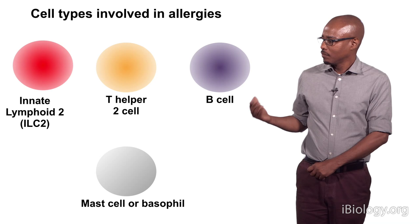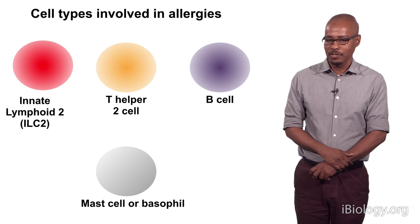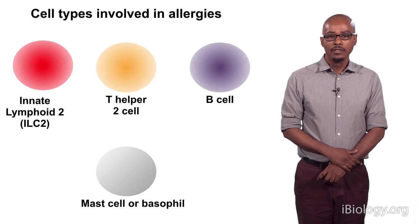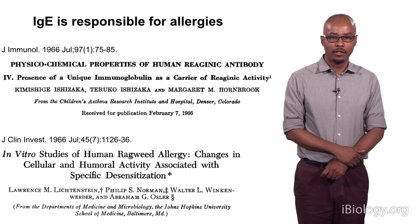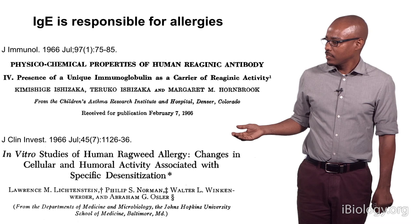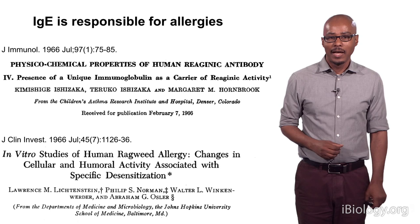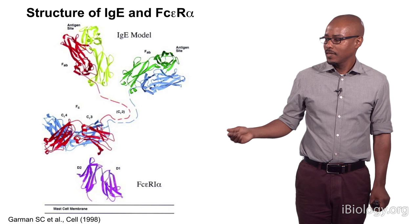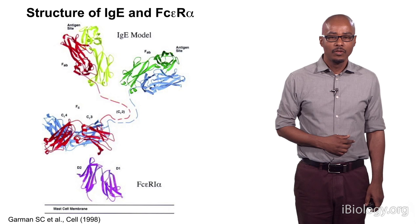The allergic response is actually a combination of the response of a number of different cells, shown over here: an innate lymphoid cell, a T helper II cell, a B cell, and a mast cell or a basophil. These cells interact to drive the allergic response. The other thing that's important for allergies is the antibody IgE. In the early to late 1960s, Ishizaka and Liechtenstein discovered that IgE was actually responsible for allergies. IgE is an isotype of an antibody — it has two binding sites, an Fc portion, and it can interact with the receptor. We'll come back to this structure later when we look at the actual response to IgE.